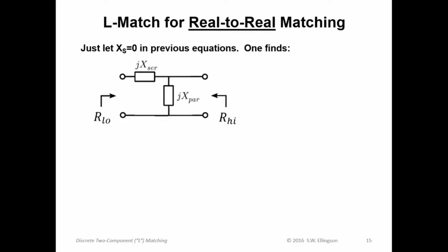Okay, one final idea in this lecture, and that's L matching for real-to-real impedance matching. In this case, we're just going to let X_s be zero, so that we're matching a real-valued impedance to another real-valued impedance. In that case, I'm going to call one of these impedances R_low and one of these R_high. The lower-valued resistance is called R_low, and the higher-valued resistance is called R_high.